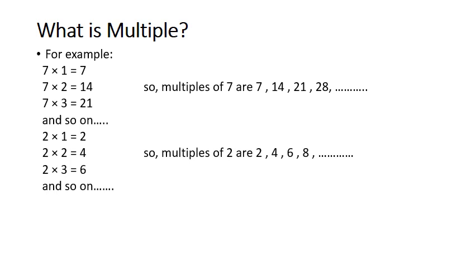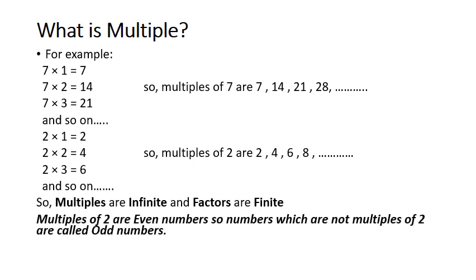From this we can derive that multiples are infinite whereas factors are finite. Since multiples of 2 are even numbers, the numbers that are not multiples of 2 — such as 1, 3, 5, 7, 9 — are odd numbers. So here we can also understand the concept of even numbers and odd numbers.